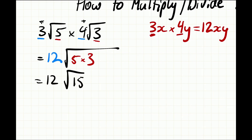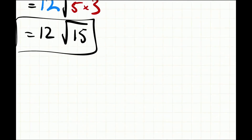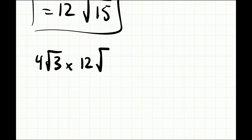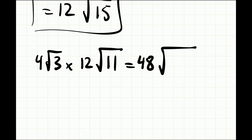All we're doing is multiplying the coefficients outside the surds by each other, followed by multiplying the values inside the surds by each other. Let's have a look at another example: 4√3 multiplied by 12√11. We know that 4 multiplied by 12 gives us 48, and 3 multiplied by 11 gives us 33, so the answer is 48√33.